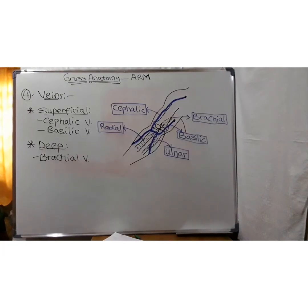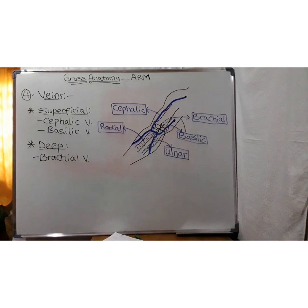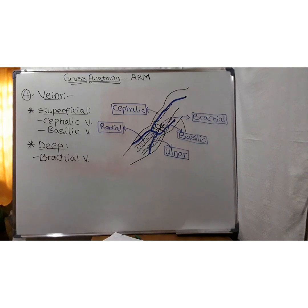There are two sets of veins. The superficial veins are the cephalic and the basilic vein, both arising from the dorsal venous network of the arm. The basilic vein ascends on the medial aspect of the arm, whereas the cephalic vein ascends on the anterolateral aspect. The deep vein — the brachial vein — begins at the elbow by union of the ulnar and radial veins, and ends by merging with the basilic to form the axillary vein.